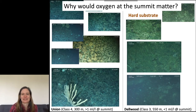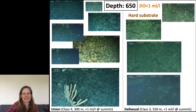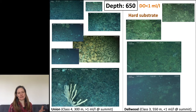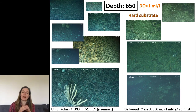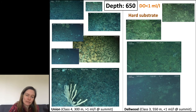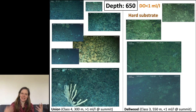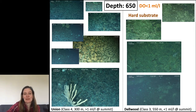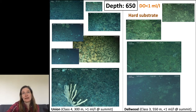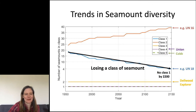Why does oxygen at the summit matter? Comparing Union (class 4, has oxygen at summit) with Delwood (class 3, no oxygen at summit) at the same depth and substrate, we see that the oxygenated seamount is much more abundant in life. There seems to be some kind of cascading effect of oxygen at the summit on the whole seamount, and we may be seeing ecological change as seamounts switch from class 1 to class 2.